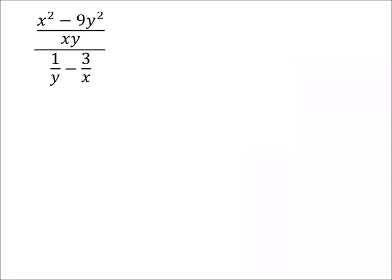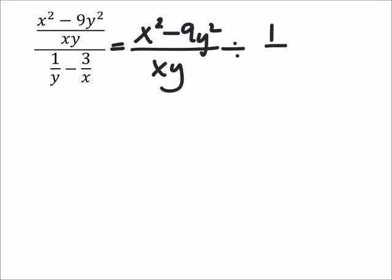All right, same idea. We got this fraction divided by a fraction, and that's how I'm going to write it out. I got x squared minus 9y squared over xy, and this is now divided by 1 over y minus 3 over x. It helps to put that in parentheses so that we don't get our operations mixed up, otherwise you may just divide it by 1 over y, which is not what we should do.